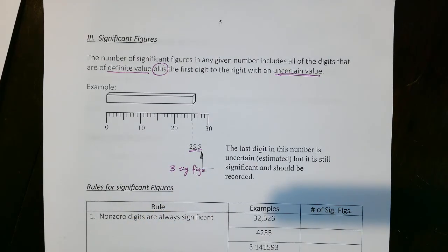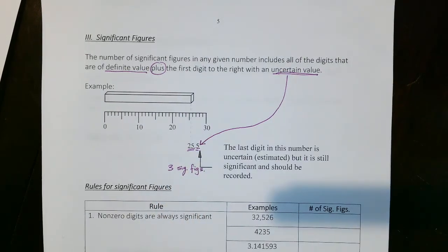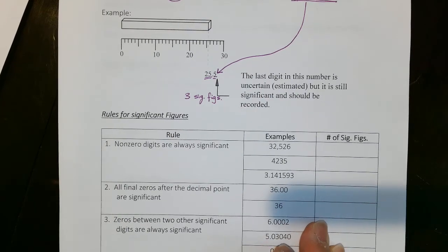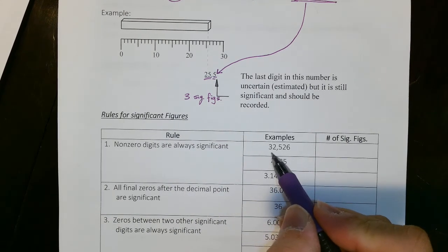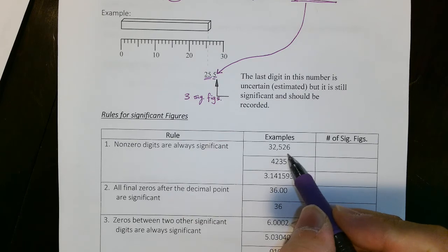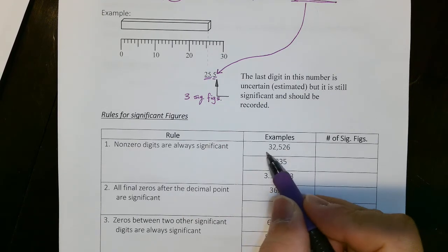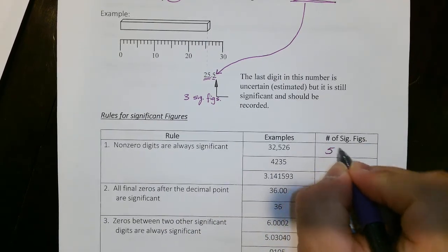Even though 0.5 is an uncertain value that was guesstimated, it is still significant. So when this is recorded as 25.5, there are three sig figs in this measurement. Now here are some rules of significant figures. Rule one: non-zero digits are always significant. For example, 32,526 — all these numbers are non-zeros, and there are five of them, so 32,526 has five sig figs.